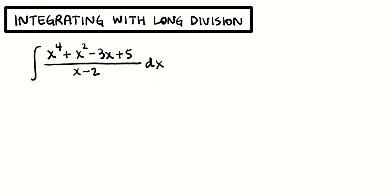So here's a fraction integral that we have not dealt with so far this year: x to the 4 plus x squared minus 3x plus 5, all divided by x minus 2. We've done some where we could cancel the x minus 2, but x minus 2 is not going to divide this cleanly — we can't factor the numerator. So what we're going to do instead is use long division.